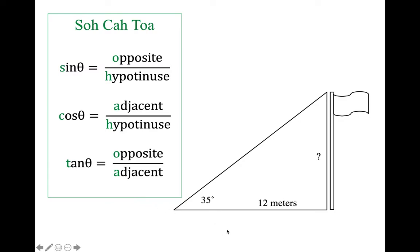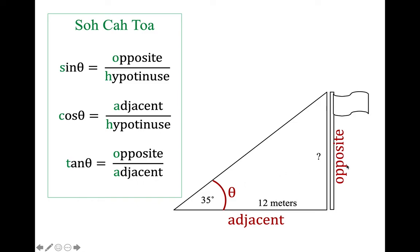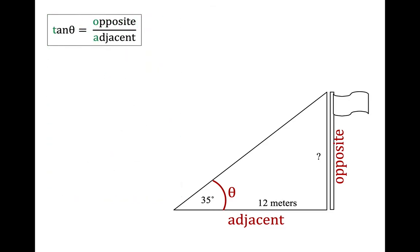Looking at our first problem, we have theta at 35 degrees, and the side adjacent to theta is 12 meters. You know it's adjacent because the other side next to it is the long side — the hypotenuse. What we're looking for is the side opposite the angle. We have theta, we have adjacent, and we're looking for opposite. Of the three SOH CAH TOA ratios, the one that has adjacent, opposite, and the angle is tangent. So we're going to use tangent of theta equals opposite over adjacent.